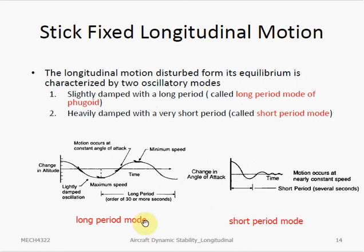The long period mode, as the name suggests, has a long period of response. The period is in order of 30 seconds or more. The period can go up to about 120 seconds. The mode of motion is also characterized by low damping ratio. It is only lightly damped, thus having a longer time to settle. It also has low frequency.